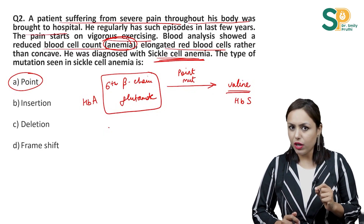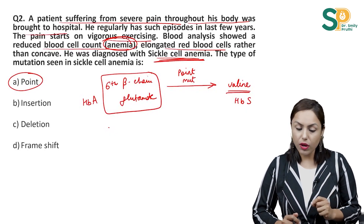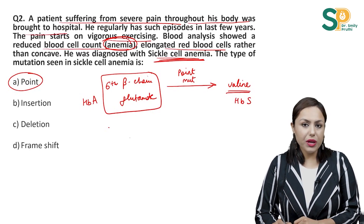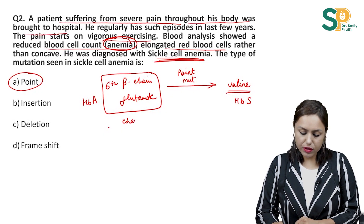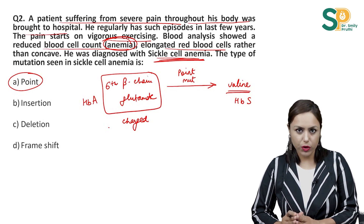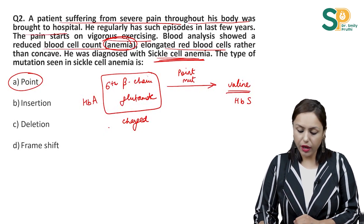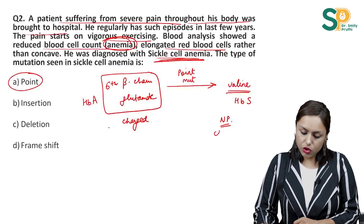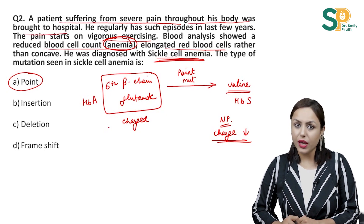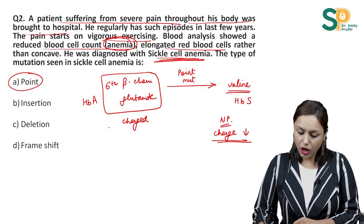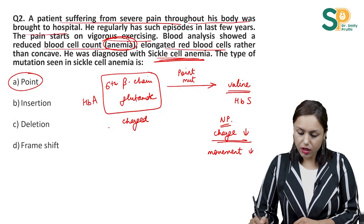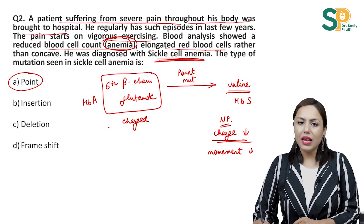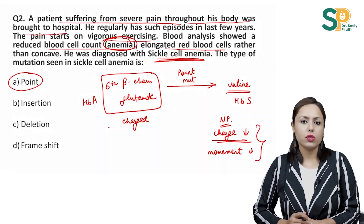There is only one difference of one amino acid. Glutamate is a negatively charged amino acid, but valine is non-polar. So charge decreases in HbS as compared to HbA. When charge decreases, movement in electrophoresis will decrease, because electrophoresis movement mainly depends on charge.